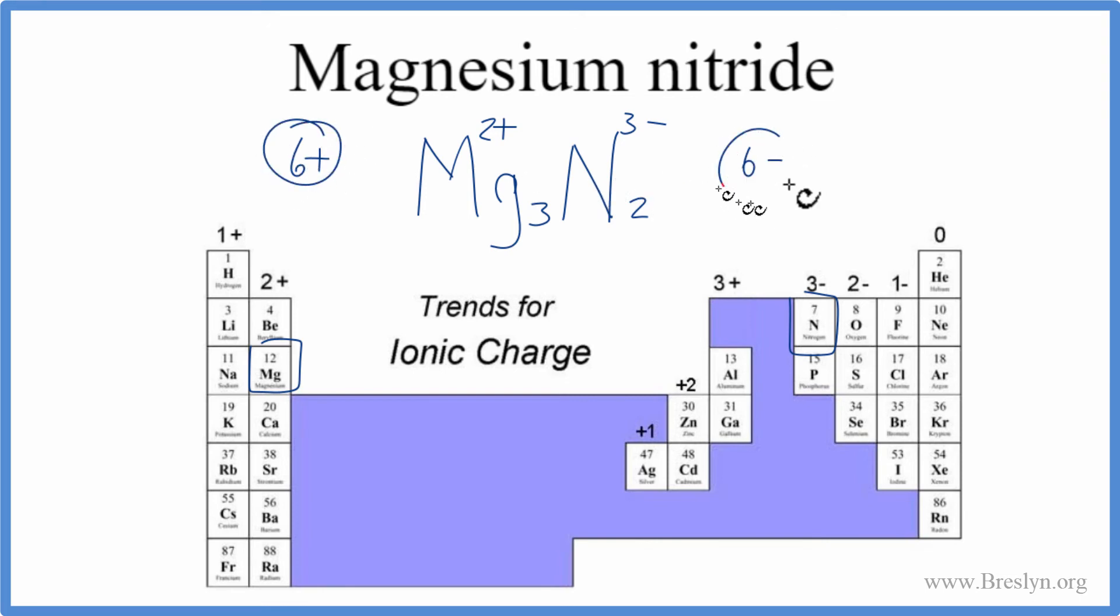Six plus, six minus, that adds up to zero. So this is the correct formula for magnesium nitride. Let's clean it up a little bit. Remove the charges. And that is the correct formula for magnesium nitride.